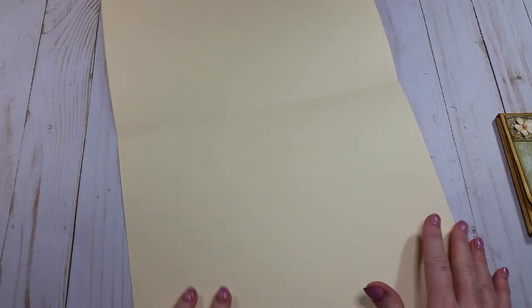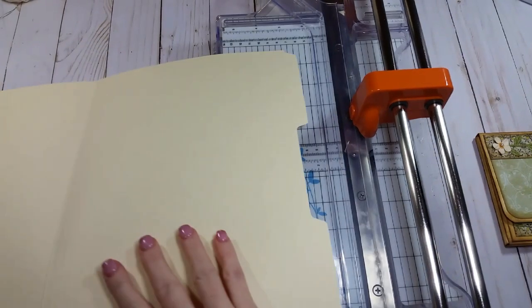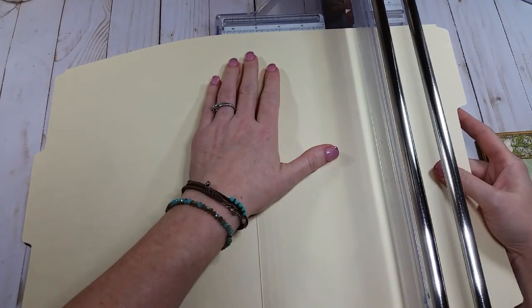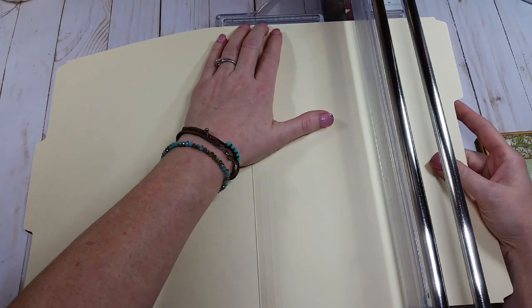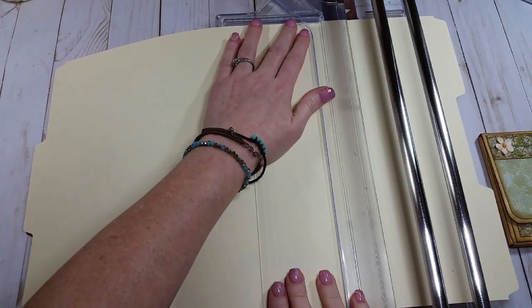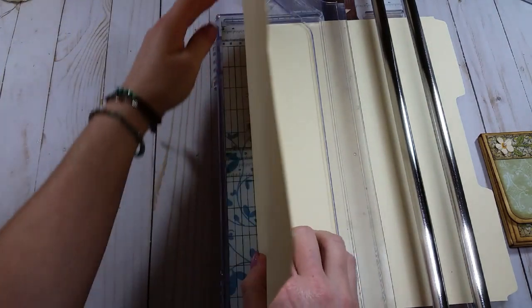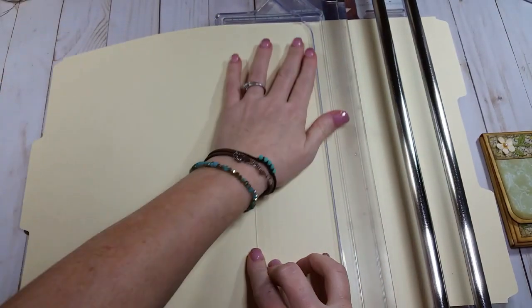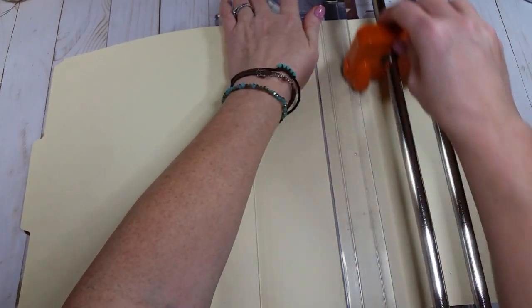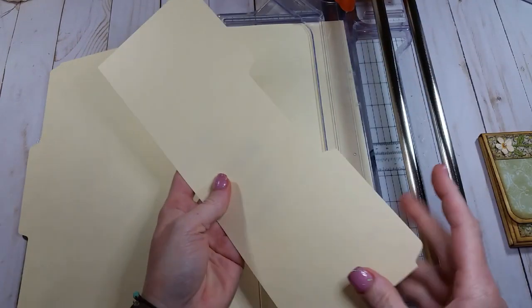So we're going to keep this tab, this side intact. And this side down here, I am going to cut off to four and a half. So I'm going to want to put my center crease at four and a half. Make sure that I'm good and straight. Sometimes file folders are not exactly straight. So don't throw this piece away. We're going to use it. So we have four and a half.